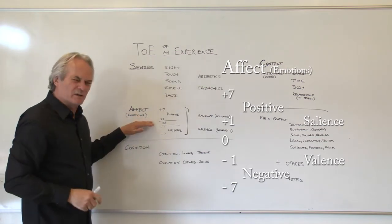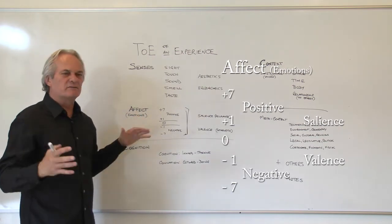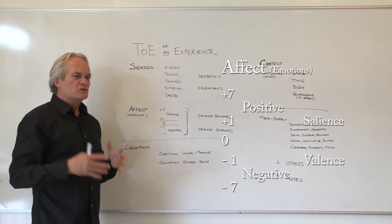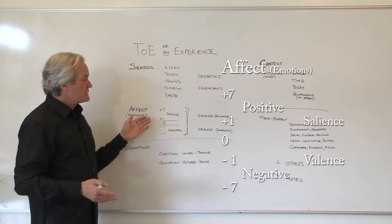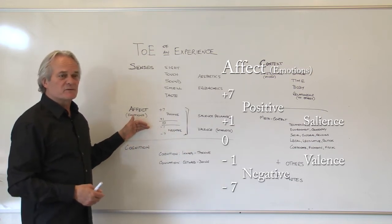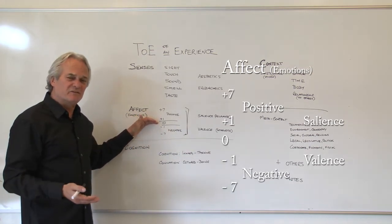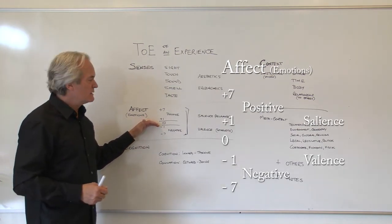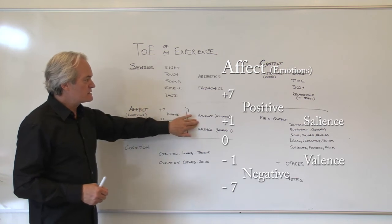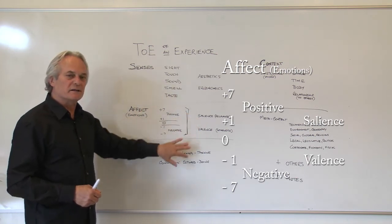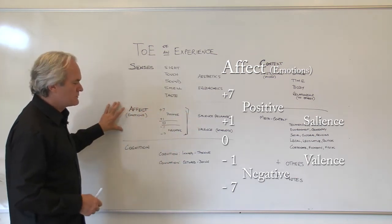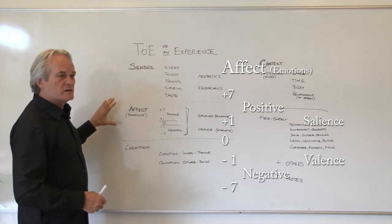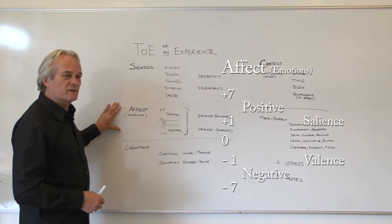Emotions are a very complicated area. In any given experience there will be a whole range of emotions, positive and negative. In my research, for instance, we're talking about 40 or 50 different identifiable kinds of emotions in a particular event. So it's a very complex area and we need things like salience and valence to understand it. In an experience we have senses interacting and causing us to have affective responses.